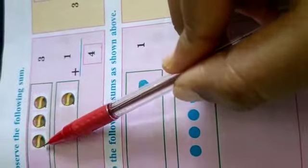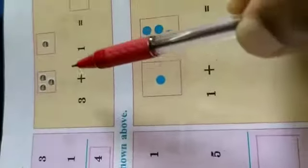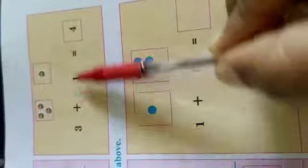Here 1, 2, 3, 4. We have to count like this. 3 balls plus 1 ball equals to 4.